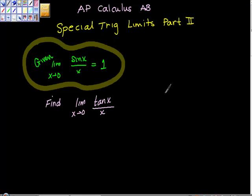Special trig limits part two. Okay, given this piece of information that we've talked about before, given this fact that we know, given that we know that the limit as x goes to zero of sine x over x is equal to one.